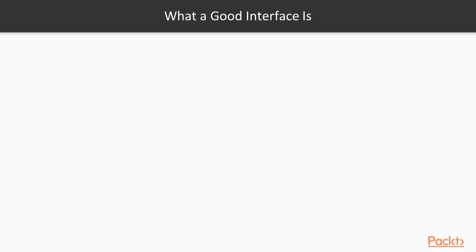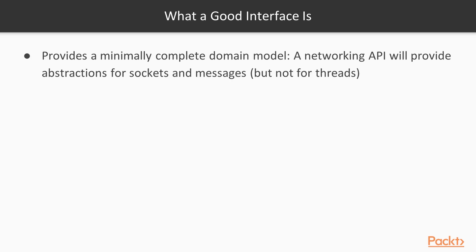So what makes a good interface? A good interface, first and foremost, provides a minimally complete model for the subject domain. For example, a networking API will provide abstractions for sockets or messages. However, it will not provide anything for threads — because of the minimally complete part.